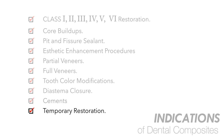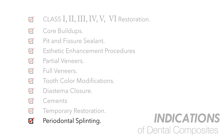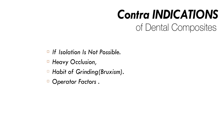After root canal therapy, if time is limited, flowable composites can be placed and cured in about 10 minutes as a temporary restoration. Periodontal splinting — when teeth have mobility following trauma — involves taking an orthodontic wire, cementing it to tooth surfaces, and using composite to bond the wire to the tooth surface.